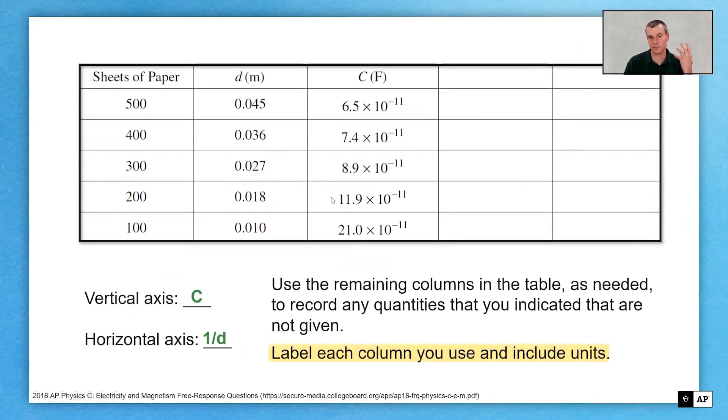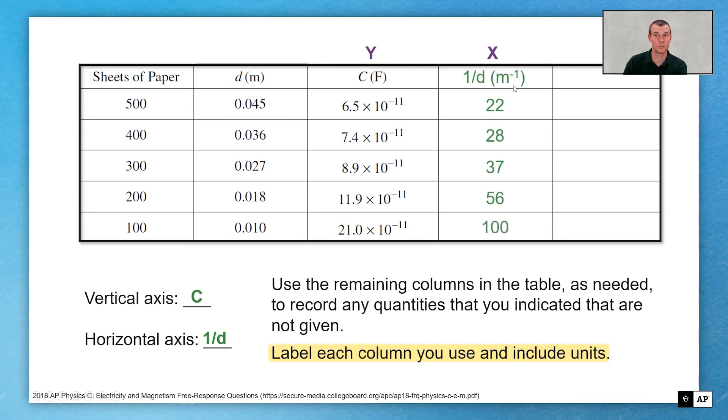So looking at this graph, we have a vertical axis of C, one over D. So this is going to be my Y. This is going to be my X, my X being one over D. It did say to use units as well. So there's my meters to negative one or one over meters.